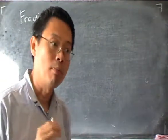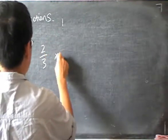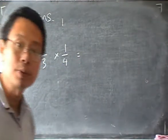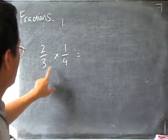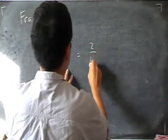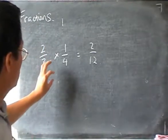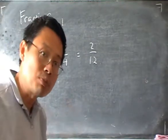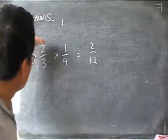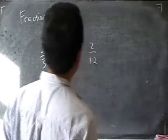Now I'll say a bit about multiplying fractions. Suppose that I have 2 over 3 times 1 over 4. I can multiply these two fractions by multiplying the tops and multiplying the bottoms separately. So 2 times 1 is 2, and 3 times 4 is 12. It's important to see that there's a difference between multiplying fractions and adding fractions — because when we add fractions we cannot add the top and the bottom separately, but when we multiply fractions we can. So we get 2 over 12.